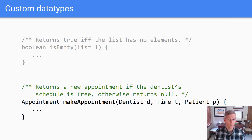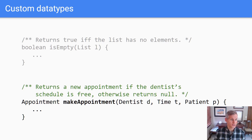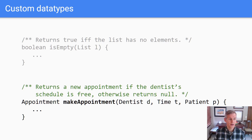Here's some code that might be found in a dentist office. The contract tells the caller when 'make appointment' will succeed — in this case, it's going to succeed if the schedule for the dentist is free at that time. It also says how the caller can detect failure: 'make appointment' will return null if the appointment scheduling fails.